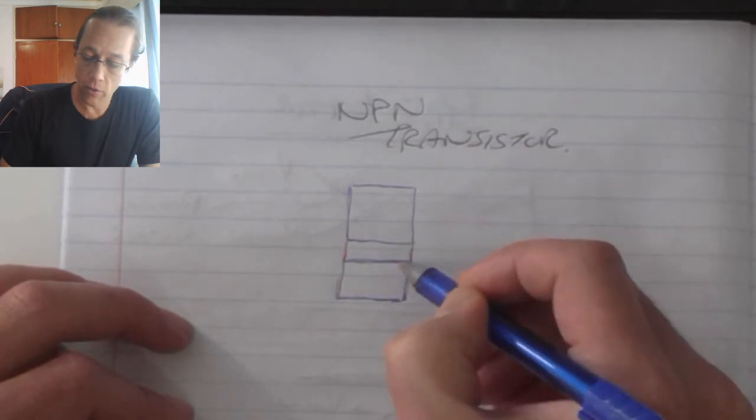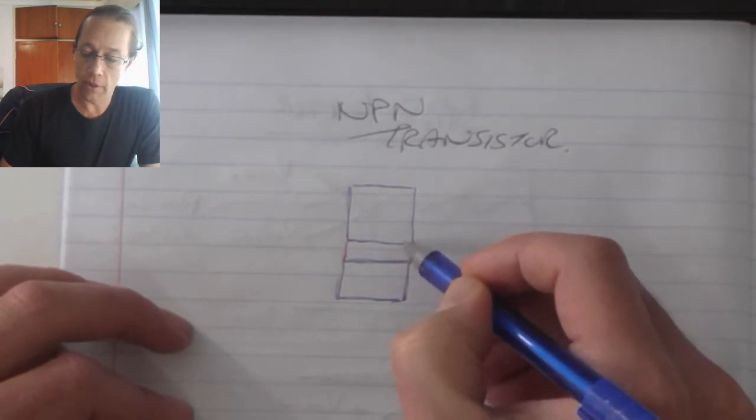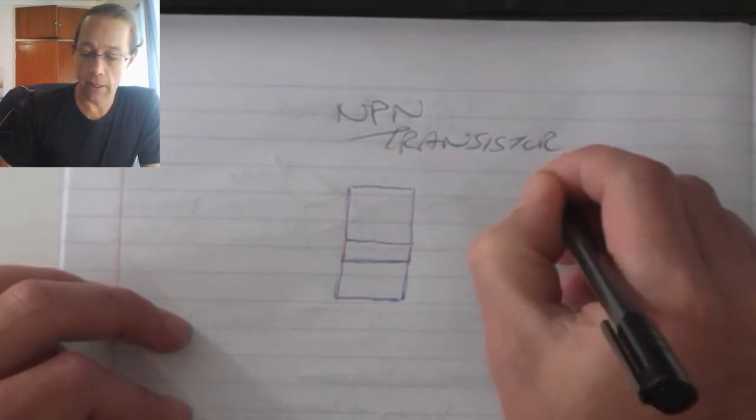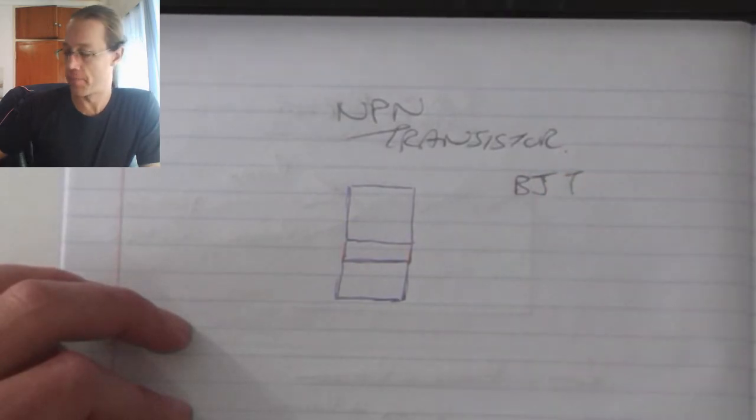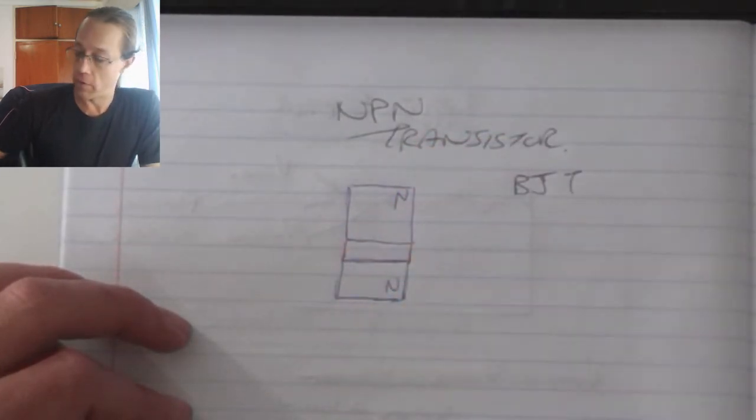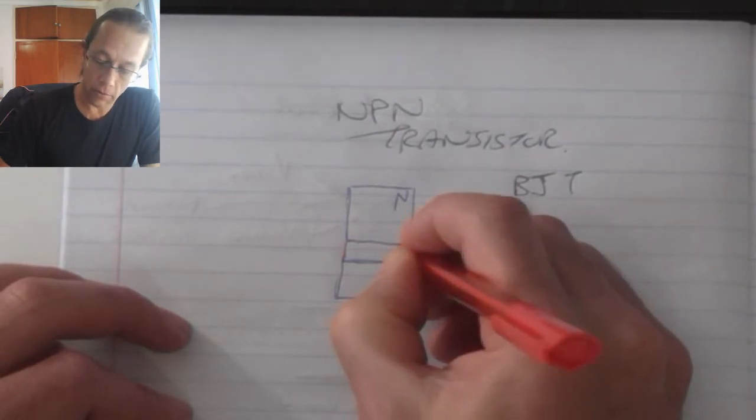So it forms two P-N junctions. The NPN transistor is sometimes also called the bi-junction transistor. So we've got two N-type materials with a P-type material in between.